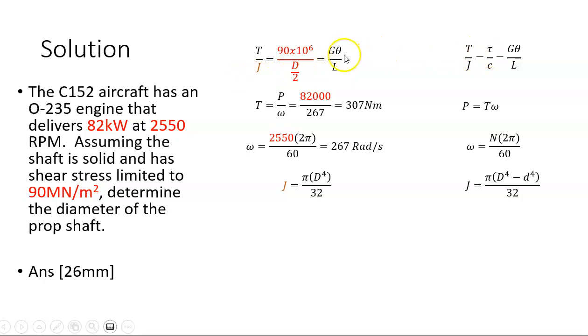Populating the formulas with what we know. Tau is 90 at 10 to power 6 MN per meter squared. I don't know what the radius is, so it's just D over 2. The omega is 2550 multiplied by 2 pi divided by 60. That turns out to be 267 radians per second.